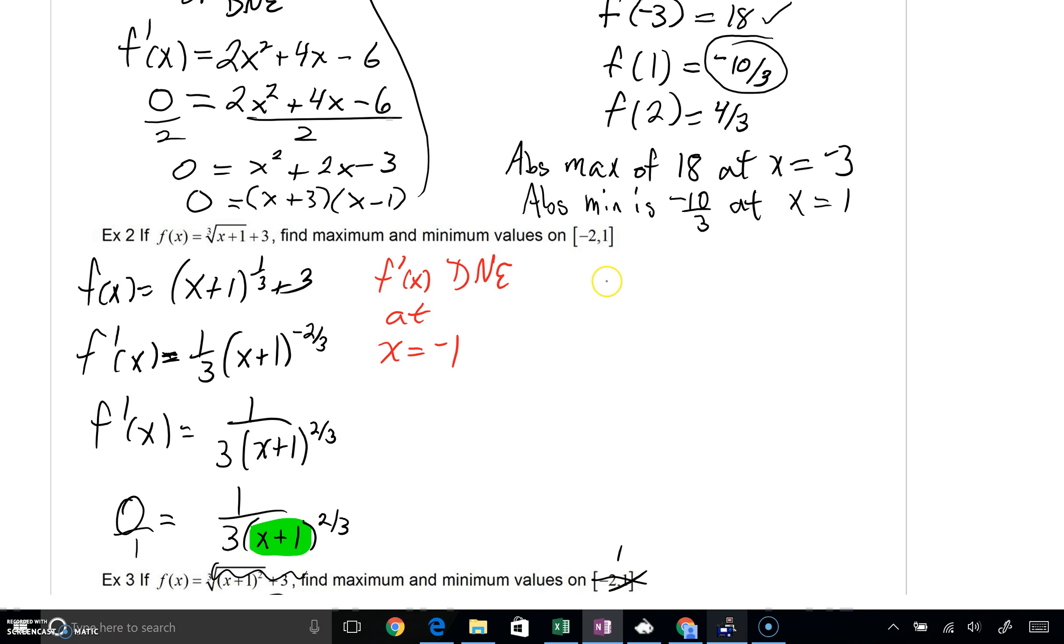And what we will do is find our endpoints, f of negative 2. Here's f of 1. But we're also going to find our critical number, f of negative 1. When we're talking about f, what we're really dealing with is we're plugging these x values into the original function. And let's do that. If I plug in negative 2, negative 2 plus 1 is negative 1. And the cube root of negative 1 is negative 1 itself. Negative 1 plus 3 is a 2.